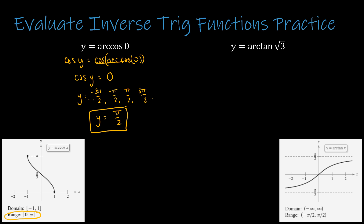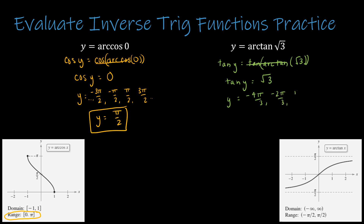Same thing for the second question. I would have to take the tangent of each side, so tangent of arctangent of radical 3. Tangent and arctangent cancel out, so tangent of y is equal to radical 3. So then I have to determine what values of tangent would result in radical 3. y would be negative 4 pi over 3, negative 2 pi over 3, pi over 3, 4 pi over 3, and so on. I need a value between negative pi over 2 and pi over 2, so the result is pi over 3.